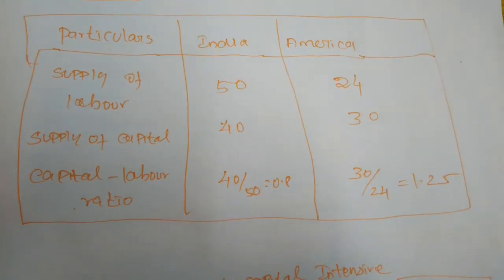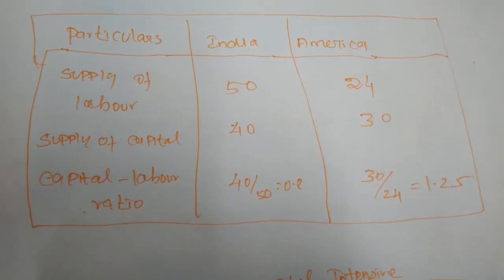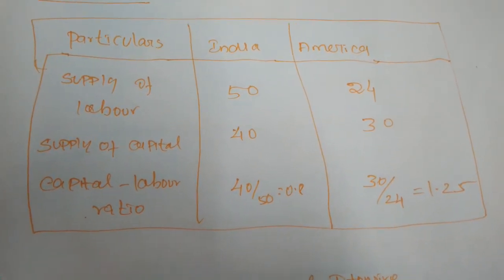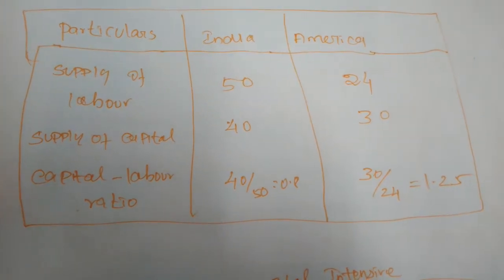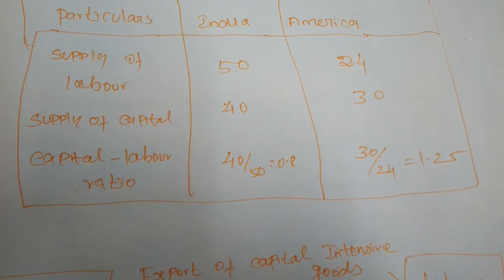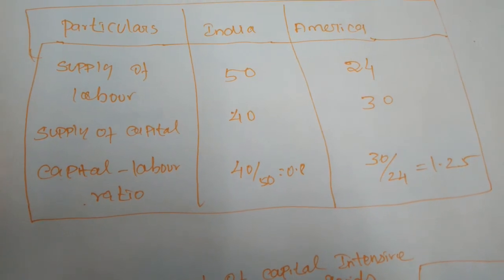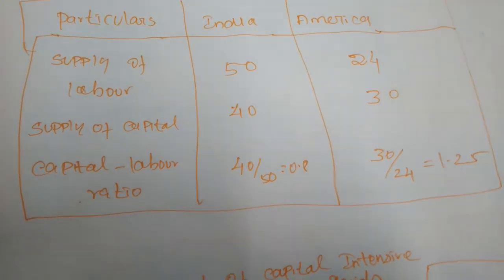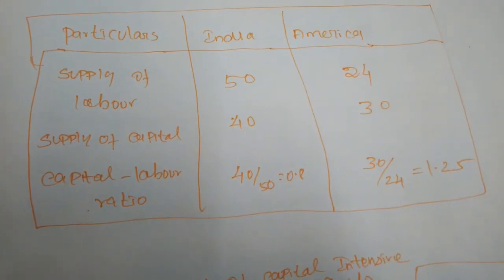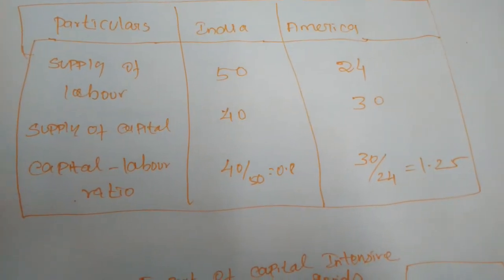A country can be regarded as richly endowed with capital only if the ratio of capital to other factors is higher than in other countries. If India has more labor supply compared to America, India is considered a labor-intensive nation. But when considering the proportions involving capital and labor, America may be the more capital-abundant country.